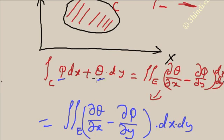What do you need to do? Take the second function and differentiate with respect to X, minus differentiate the first function with respect to Y. Then do a double integration over the region. This is the double integration; the other side is the single integration along the curve.